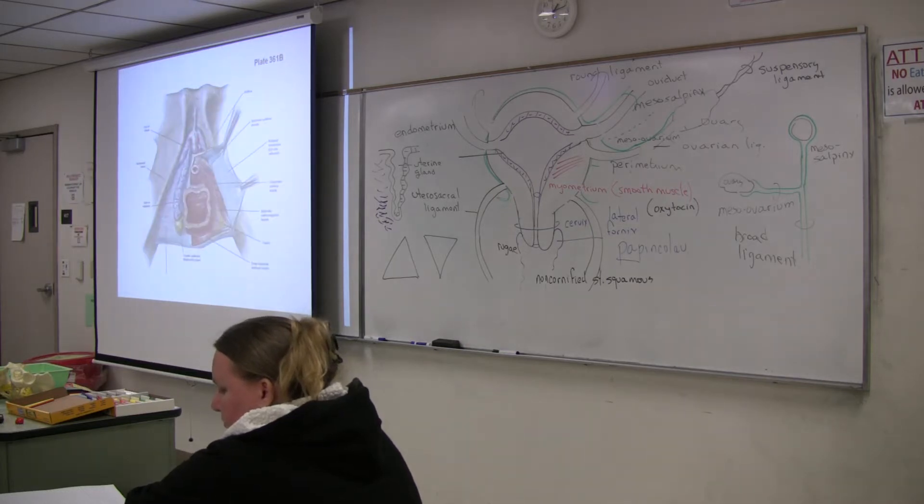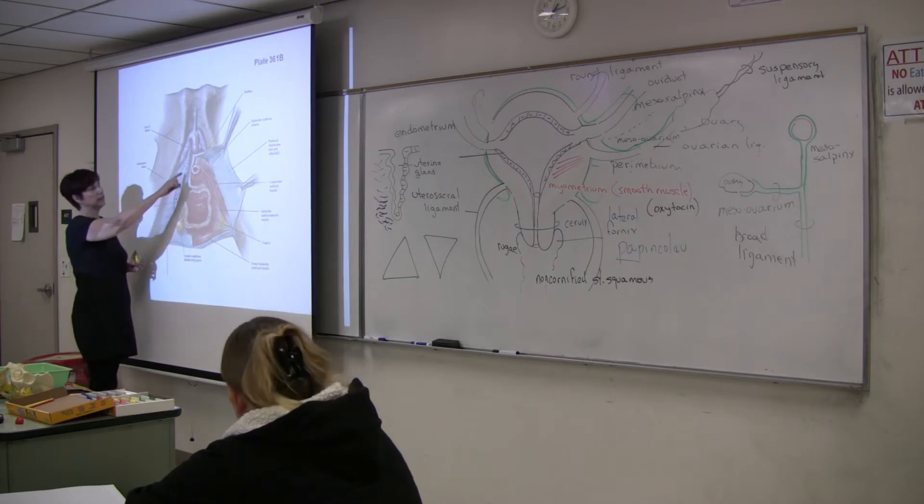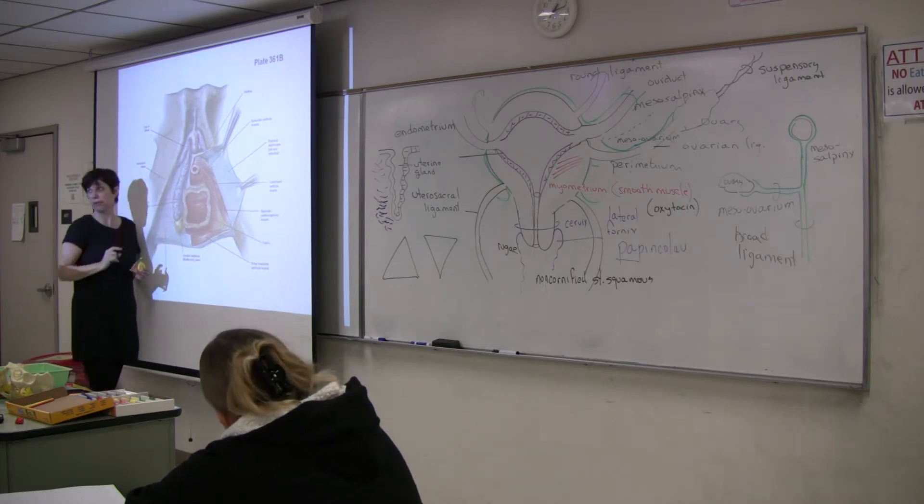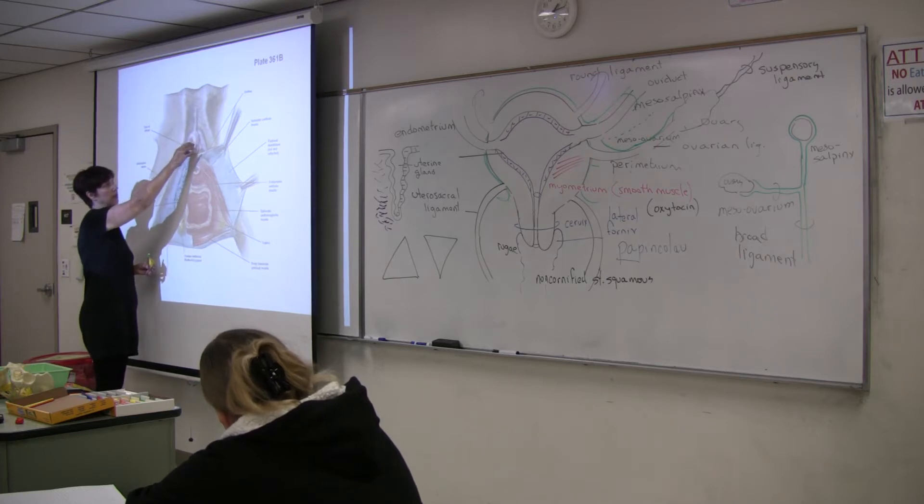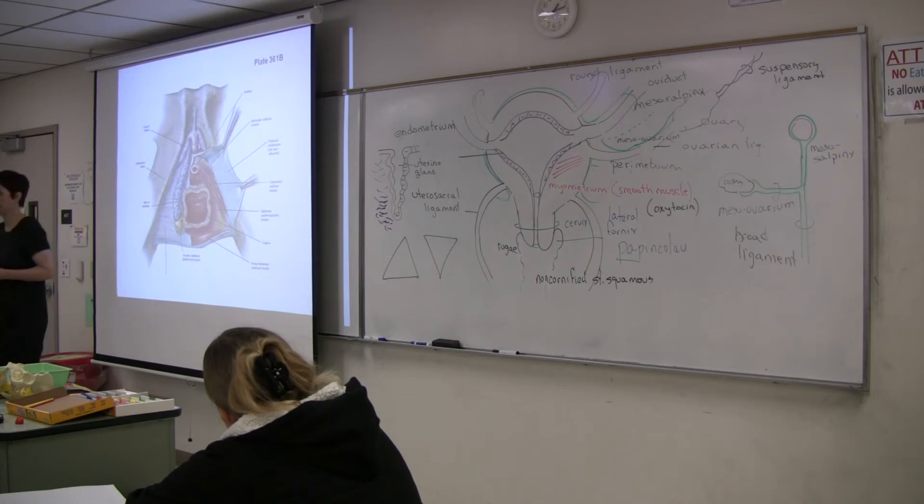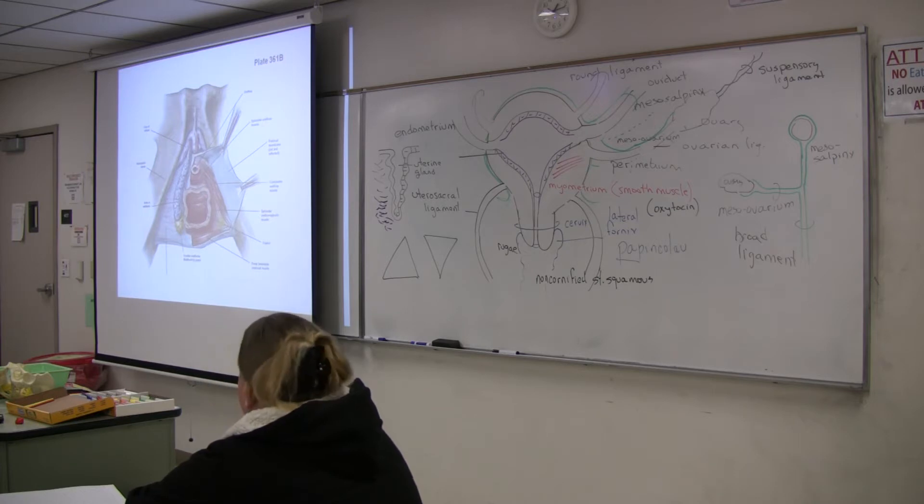So this is Netter's diagram. Here's the bulb, maybe some pieces of the corpus spongiosum, and crus corpus cavernosum, and glans clitoris. I don't know if that plate number is accurate in the newer editions, but it's in the pelvic section.